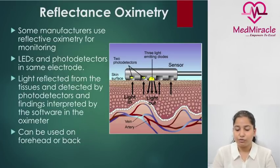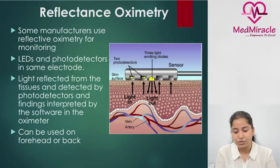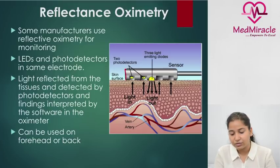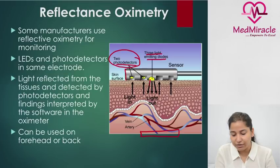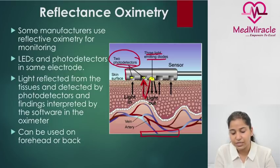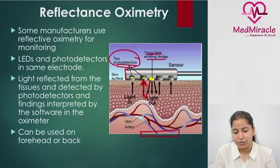Another mode of measuring oxygen in blood is reflectance oximetry. In this method, the upper part of the processor contains three light emitting diodes and two photo detectors. Instead of the detector being in the lower part, the detector is present in the upper part of the monitor, so light gets reflected and is measured there. The only difference from conventional SpO2 probes is the detector position.